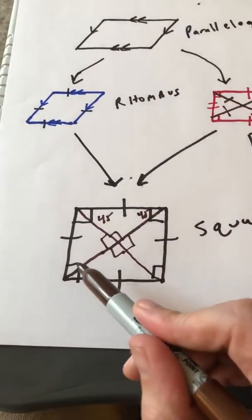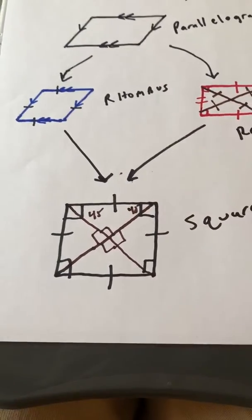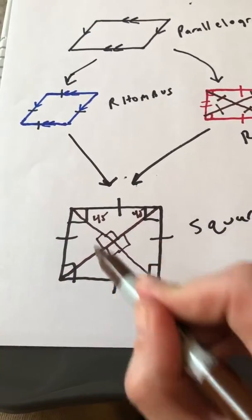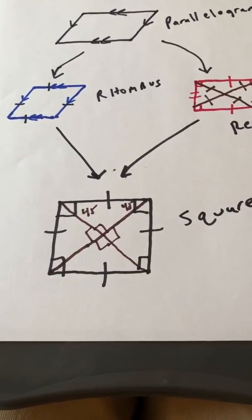Right? Because remember that the diagonals of a rhombus split an angle up into two equal parts. So all four of these right triangles here are going to be 45, 45, 90 right triangles.